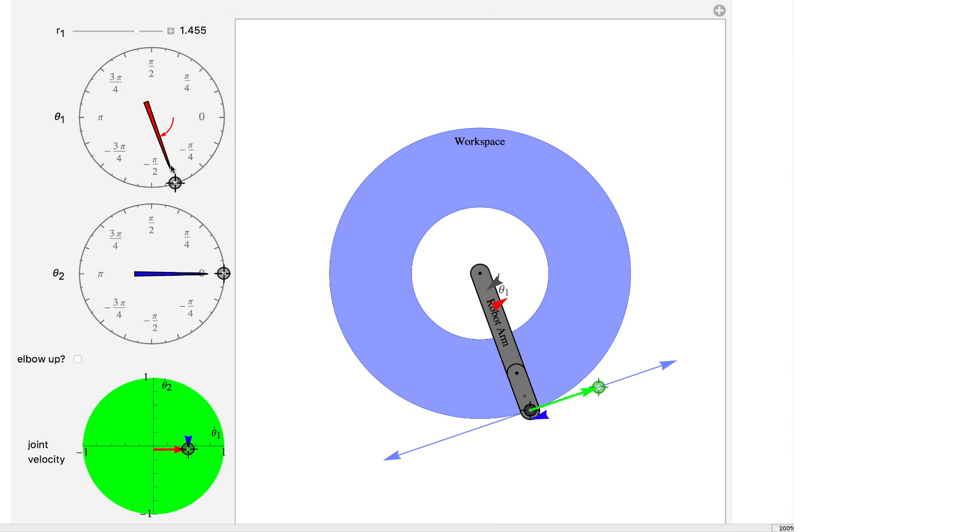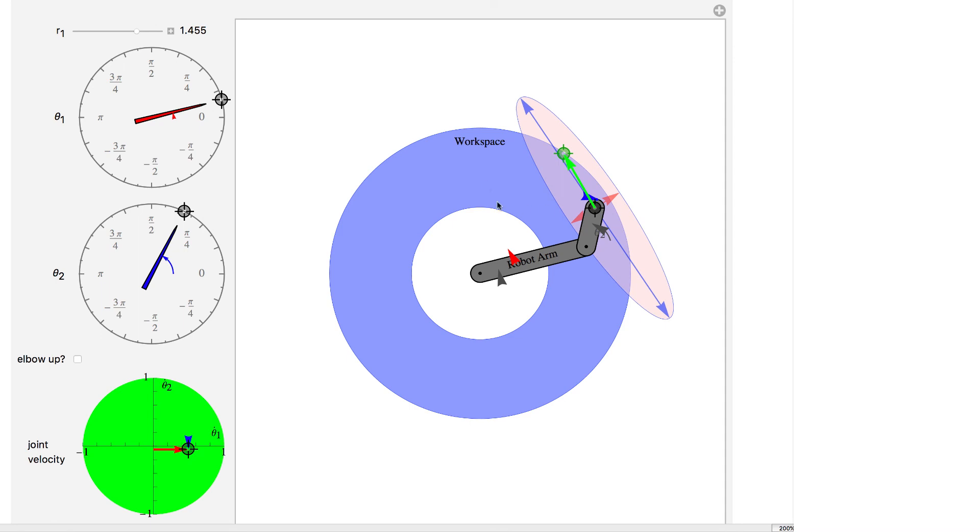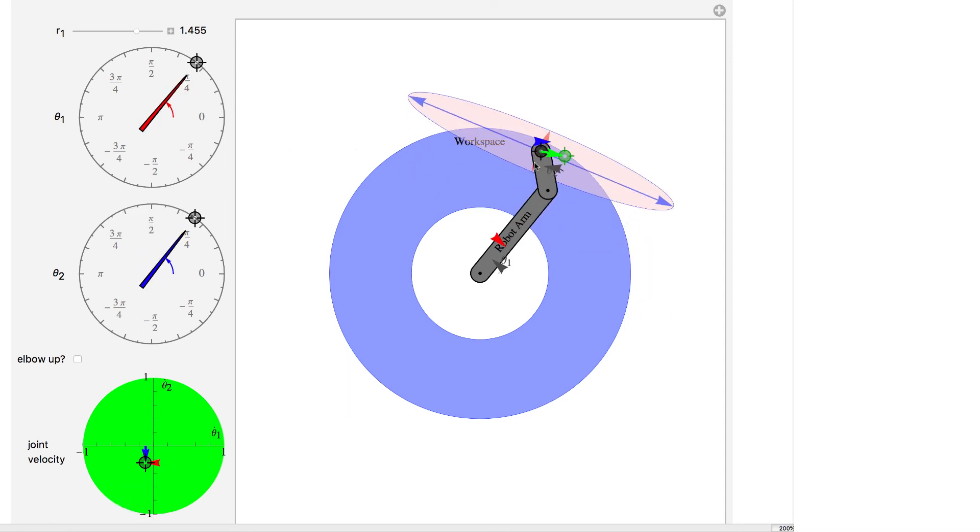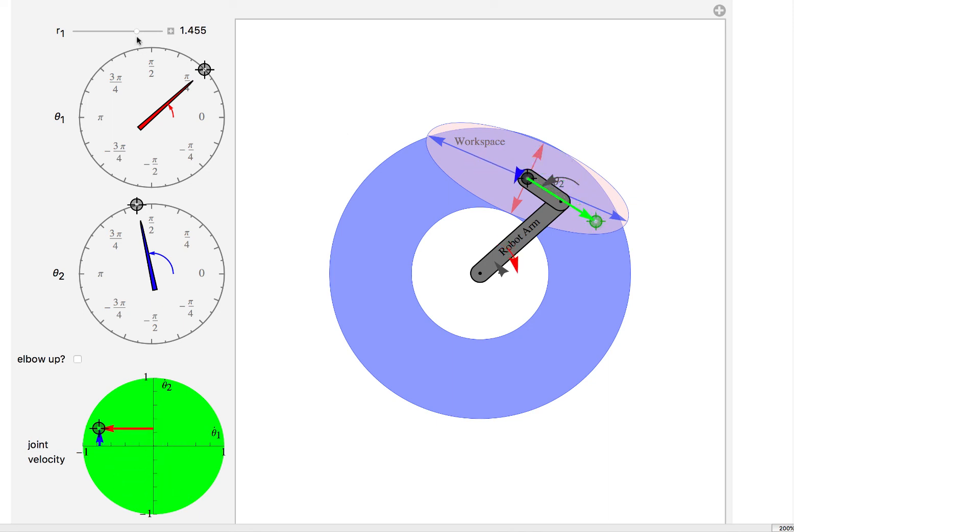So what we've got is forward kinematics, our workspace, our inverse kinematics as we move this around here. We've got our forward velocity kinematics and we've got our inverse velocity kinematics. And we've got a few things that show us and allow us to explore what the singular configurations are.